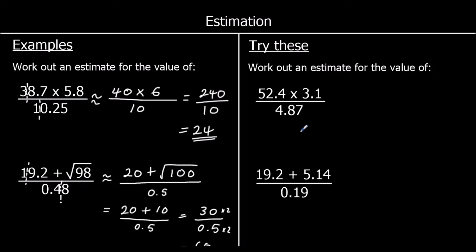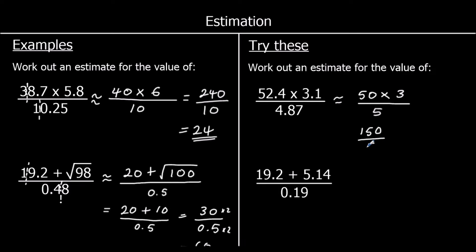Rounding all to one significant figure: 52.4 has first significant figure 5 (worth 50), next digit 2 so it stays as 50. 3.1 has first significant figure 3, next digit 1 so it stays as 3. 4.87 has first significant figure 4, next digit 8 so it rounds up to 5. So: 50 × 3 ÷ 5 = 150 ÷ 5 = 30.